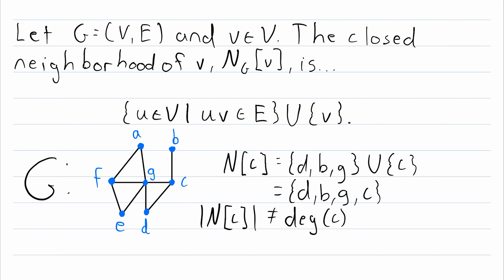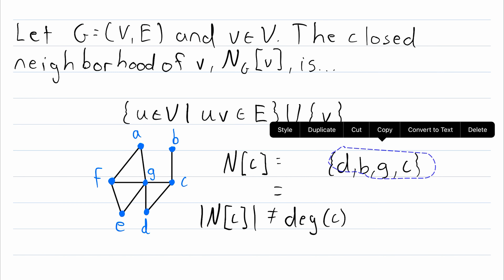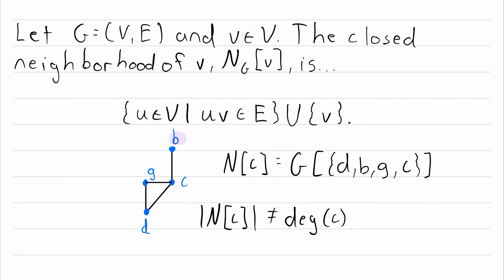Just like before, the closed neighborhood of a vertex could also be defined as the subgraph induced by the set containing all adjacent vertices and the vertex itself. Under that definition, the closed neighborhood of C would be the subgraph induced by this vertex set, which would be this subgraph here. It contains the vertices adjacent to C, it contains C, and it contains all of the adjoining edges. And those are the basics of neighborhoods.